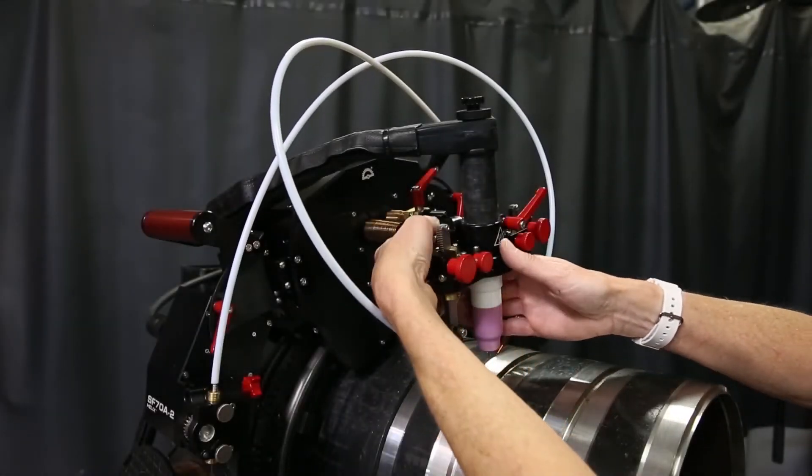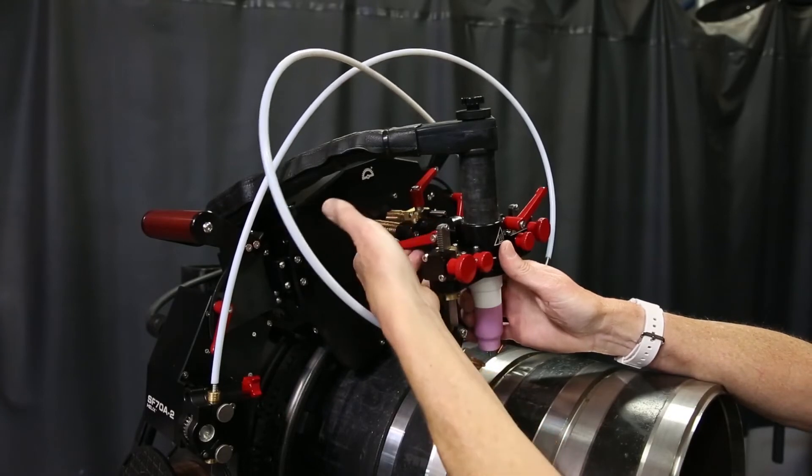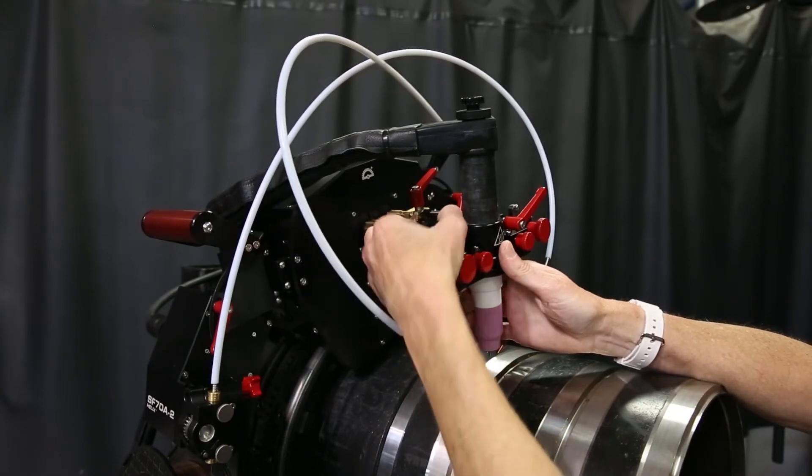Now I'm going to show you the adjustment levers on the torch. Everything is color-coded red for easy visibility.